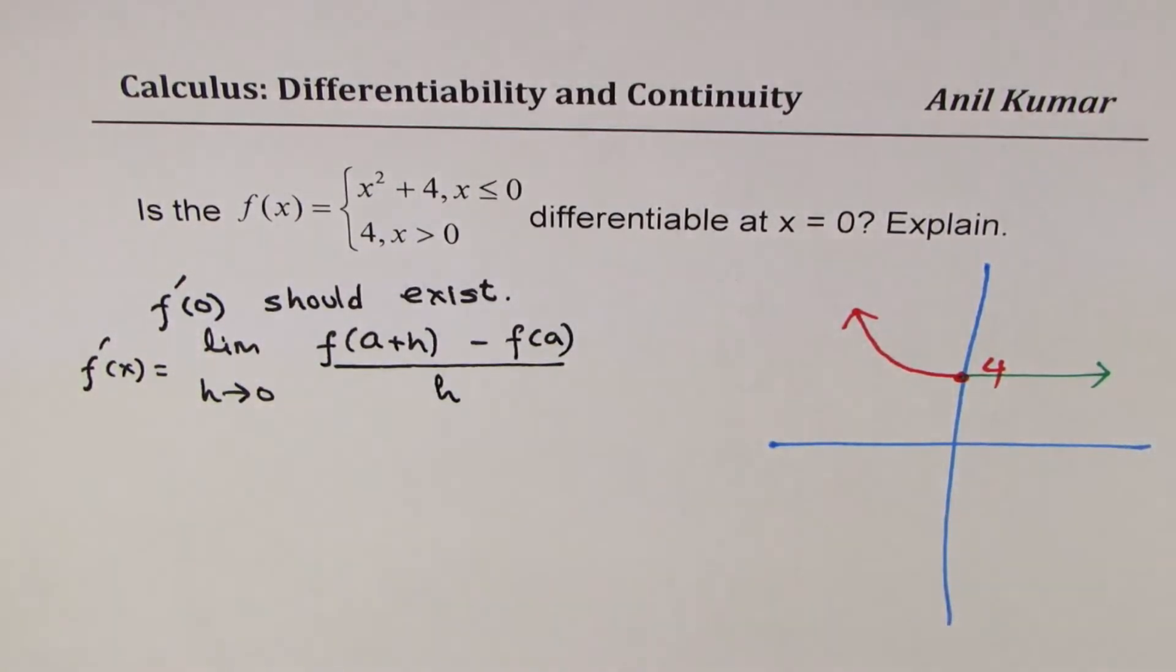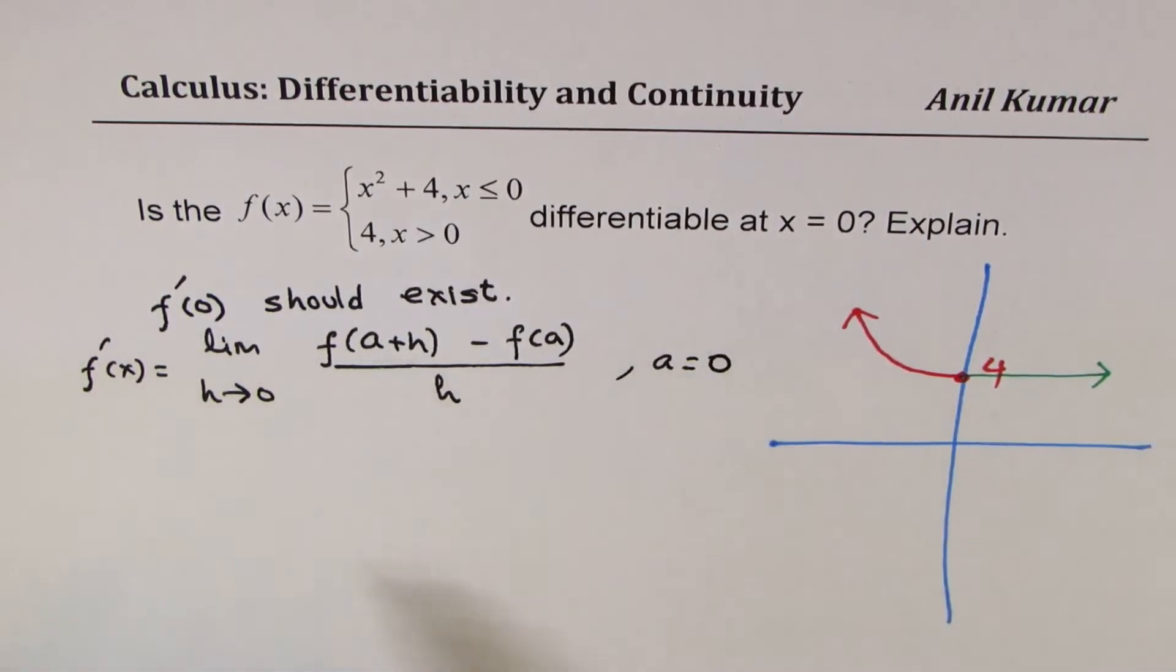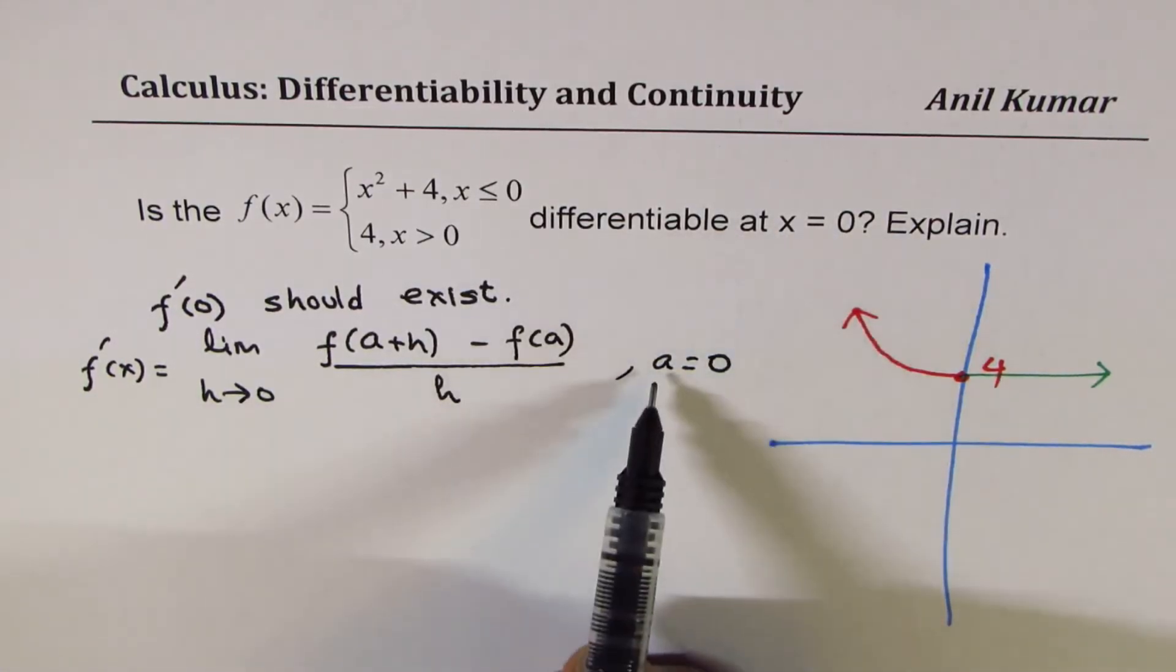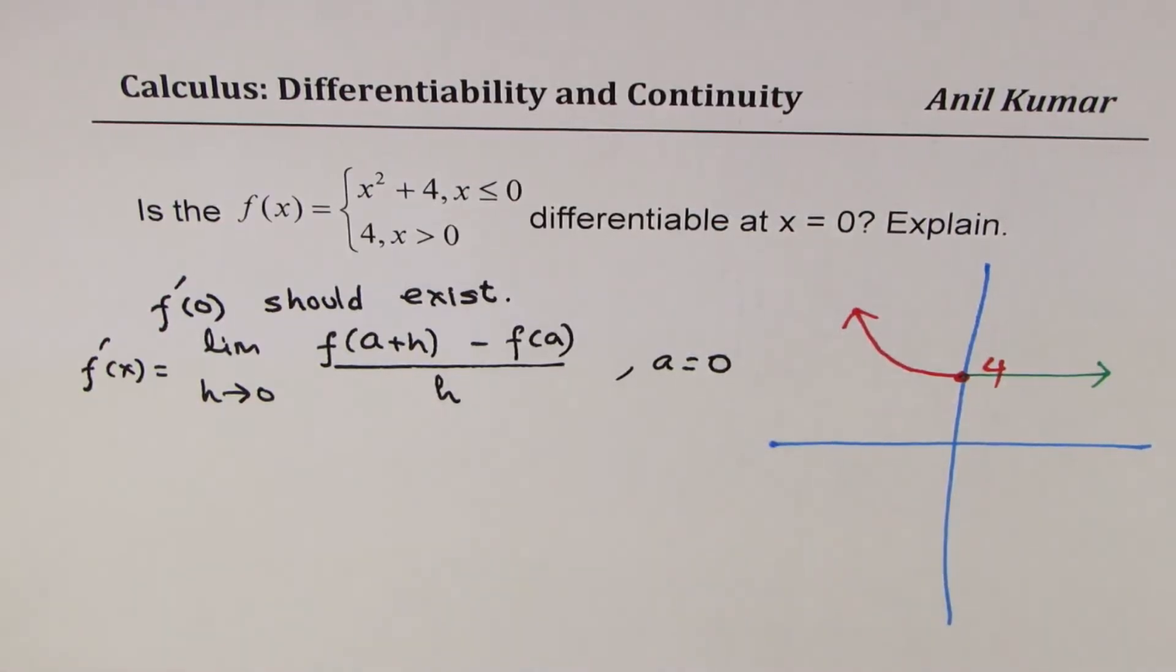Now, in our case, a is equal to 0. When we say x equals 0, the value for this value of a is 0. So we'll find both the limits, one from the left side.